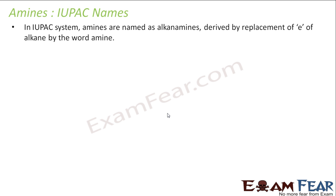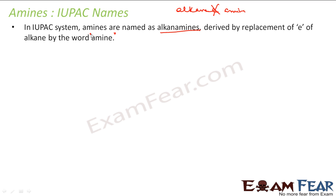Now we look at IUPAC names. In the IUPAC system, amines are named as alkanamines. Please note: in the common name it was 'alkyl amine', but in IUPAC it is derived from the alkane. You take the word alkane, remove the letter E, and replace it with 'amine' — so it becomes alkanamine.